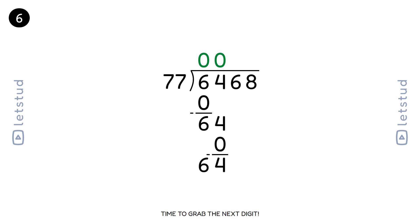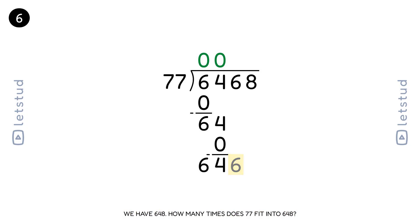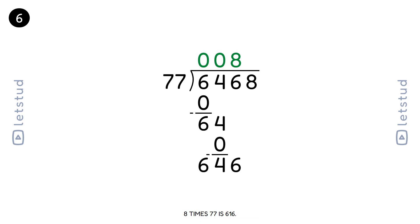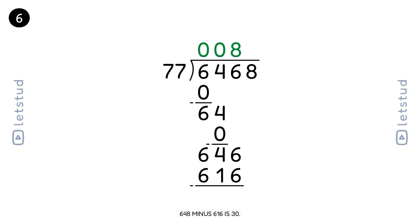Time to grab the next digit. We have a remainder of 64 and bring down the 8 to make 648. 77 fits into 648 eight times. 8 times 77 is 616. 648 minus 616 is 32.